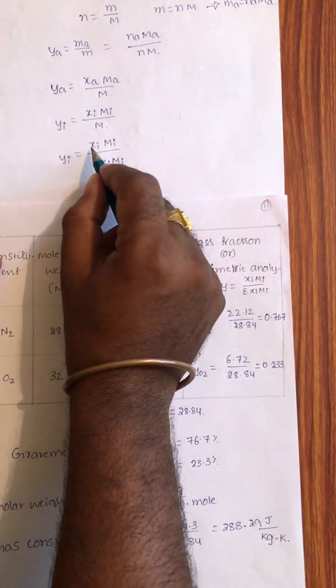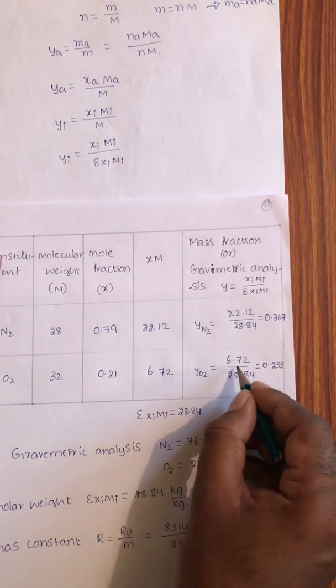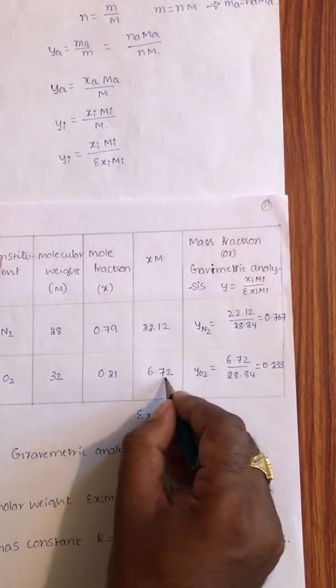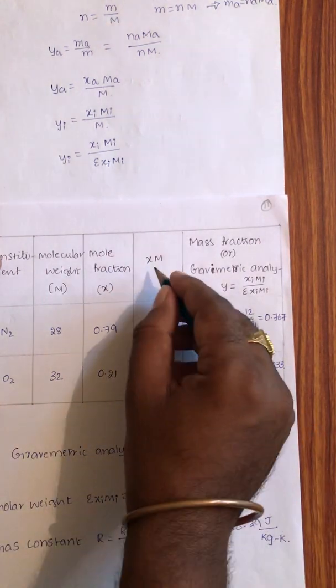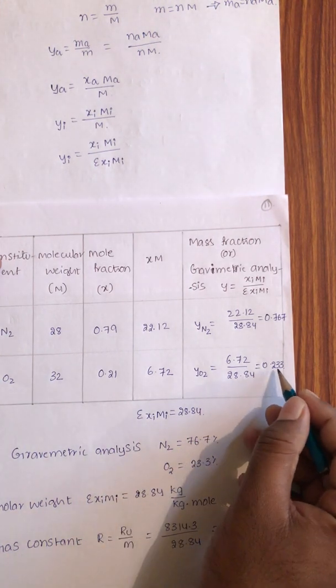If I write YO2, XO2 MO2 by series of Xi Mi. XO2 MO2 is 6.72 by series of Xi Mi, the total 28.84. That is 0.233.